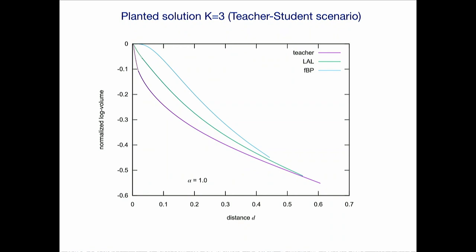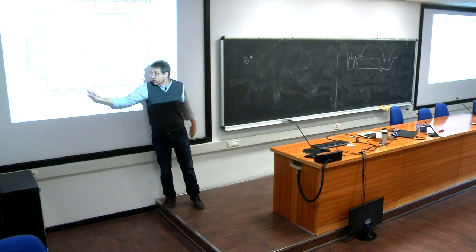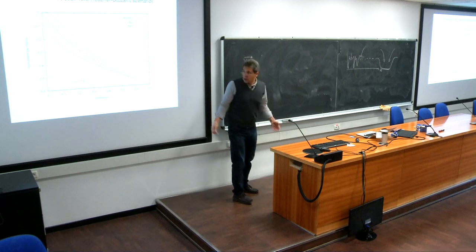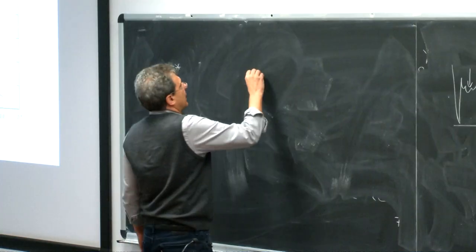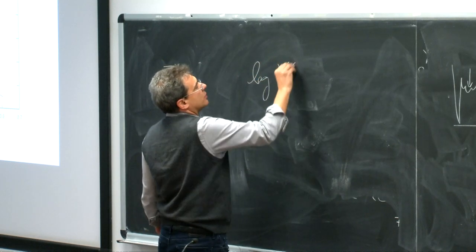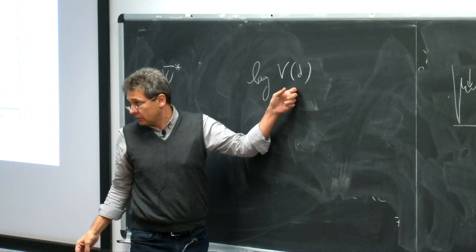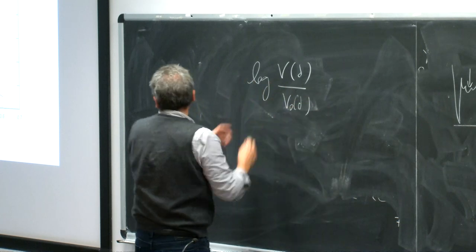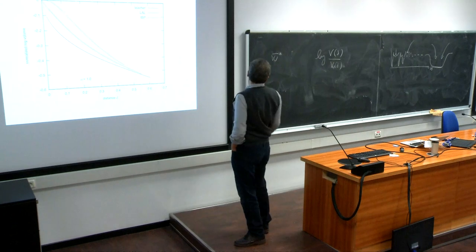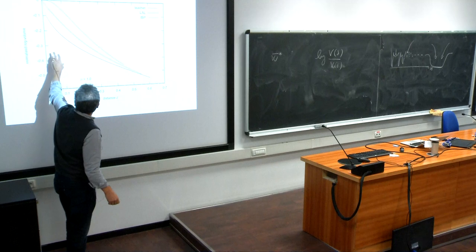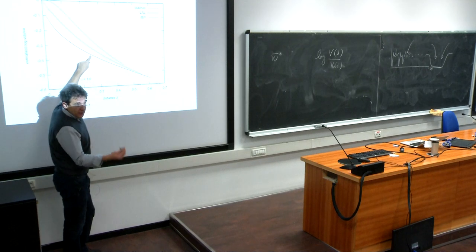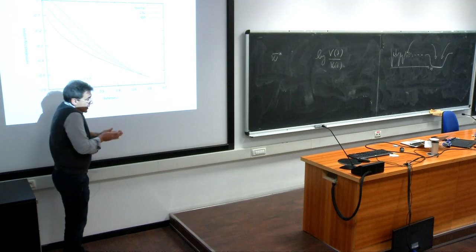This picture shows what we computed analytically — the so-called weight enumerator function. You choose a configuration w, then count how many other configurations of the weights exist at a given distance from this reference configuration that satisfy the training set. You compute the log of the volume corresponding to those solutions at distance d, divided by the maximum volume for normalization. From this plot, computed analytically for random systems, you see what a typical solution looks like.